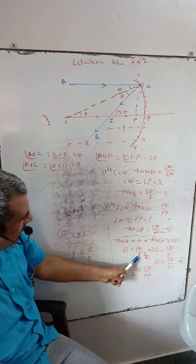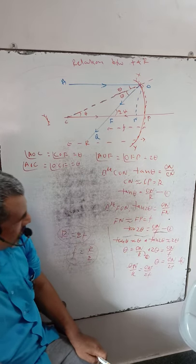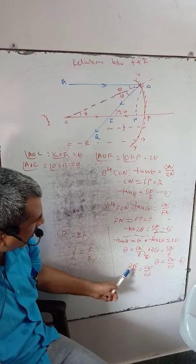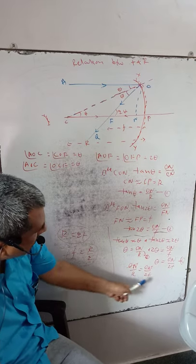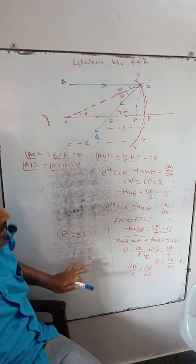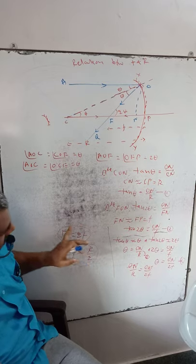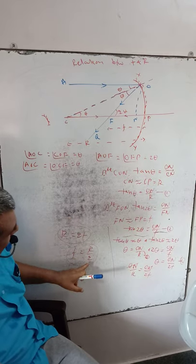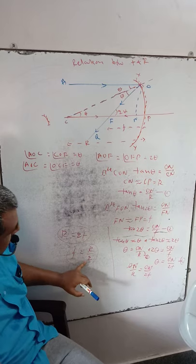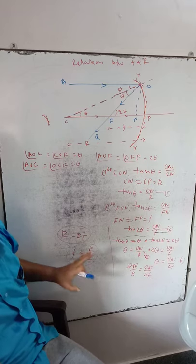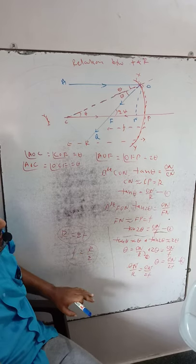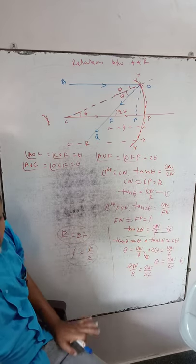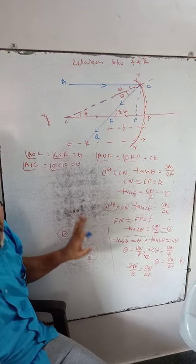Comparing equations 3 and 4: ON divided by R equals ON divided by 2f. ON cancels, giving R equals 2f. The radius of curvature of the spherical mirror is always equal to twice the focal length. Cross-multiplying: f equals R divided by 2. Half of the radius of curvature of the spherical mirror equals its focal length. So R equals 2f or f equals R by 2, and this relation is applicable only in the case of a spherical mirror.